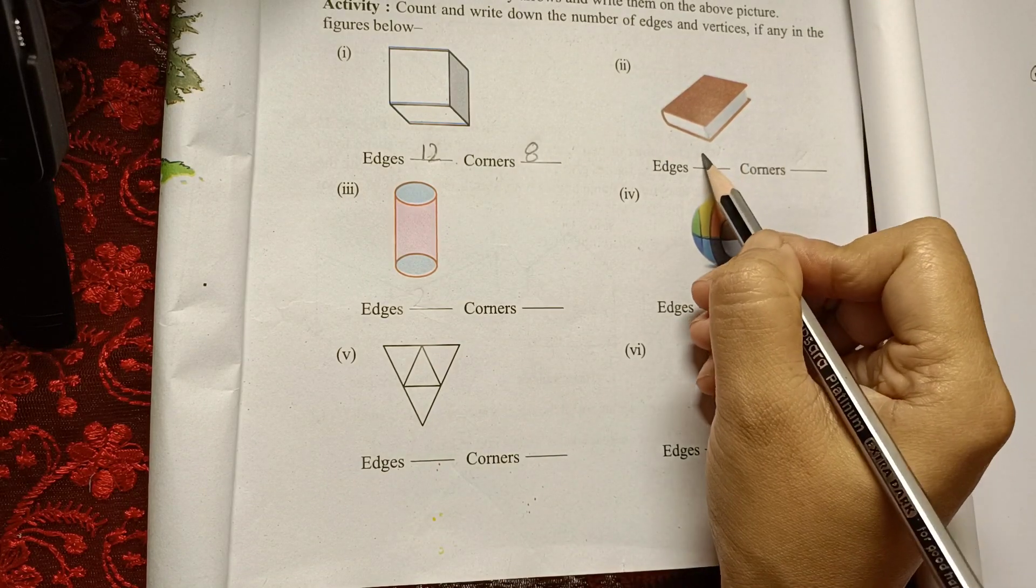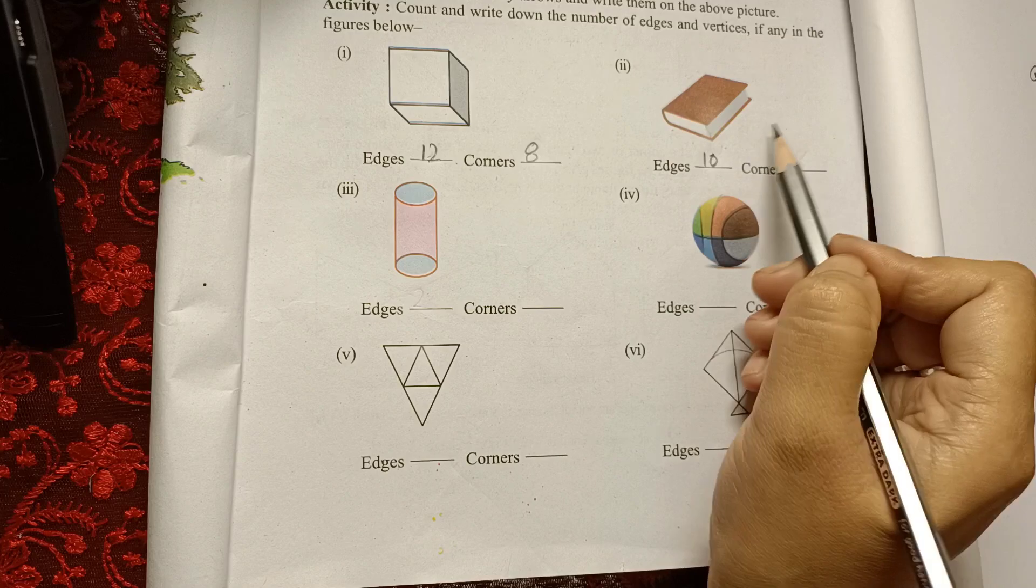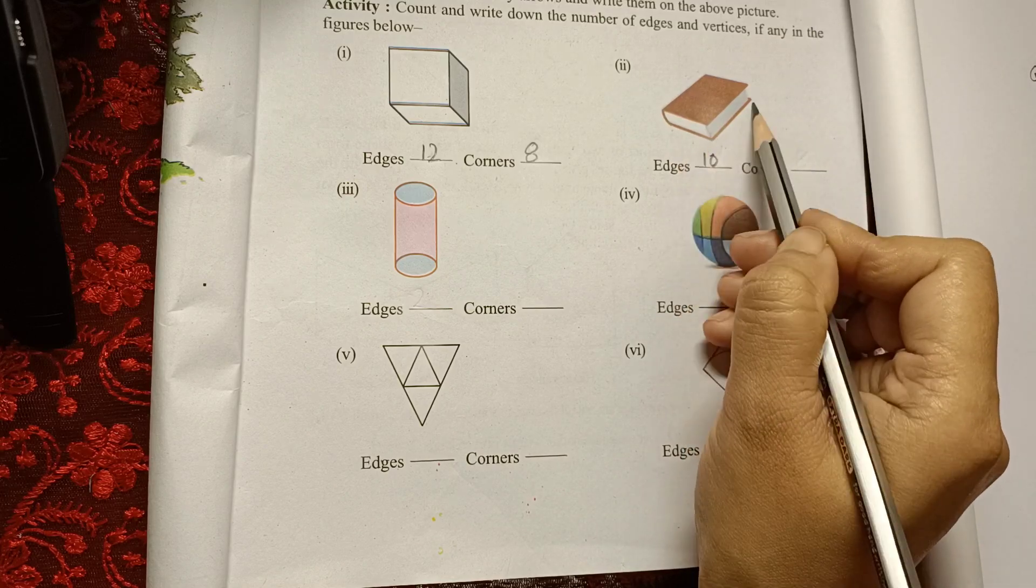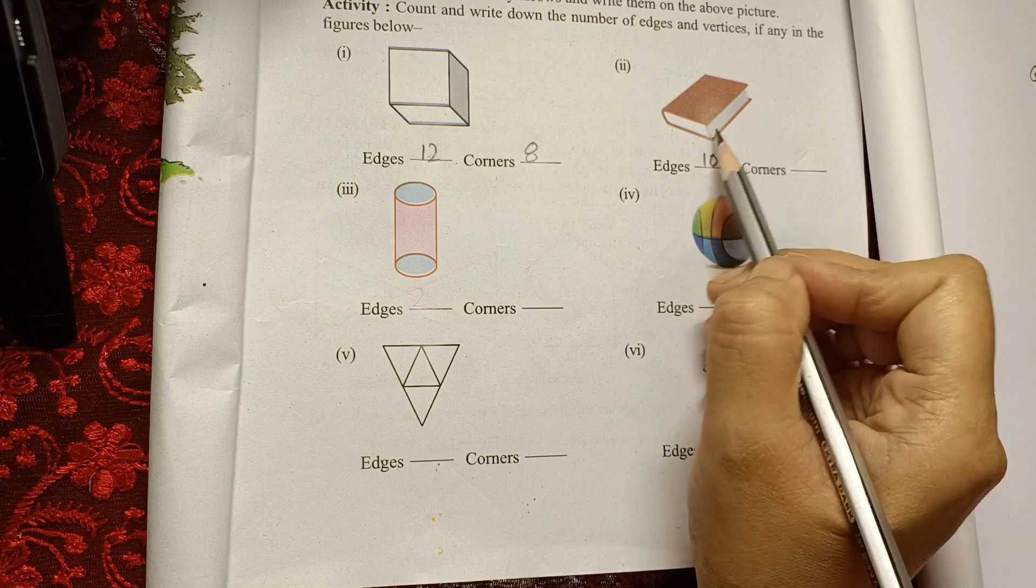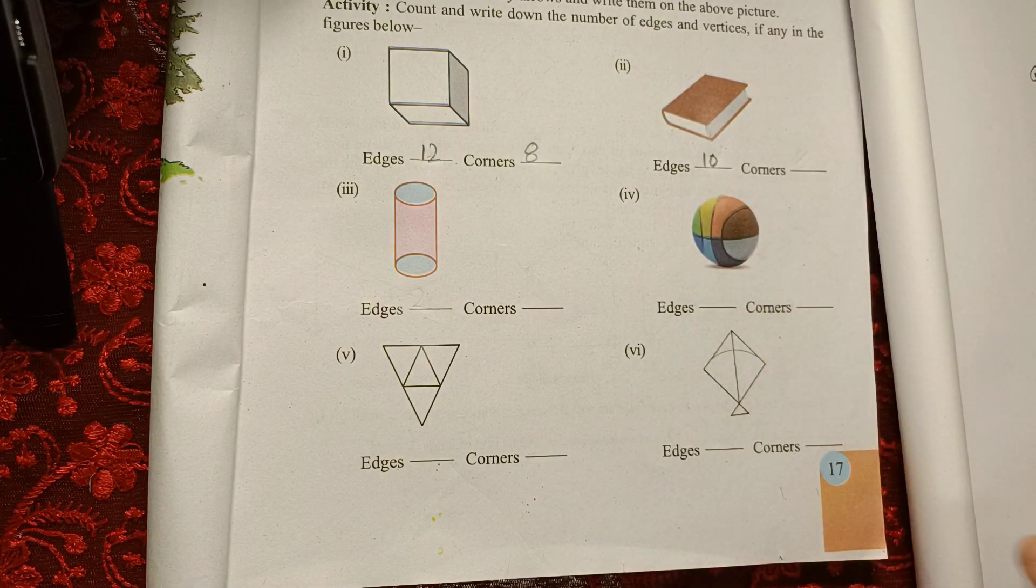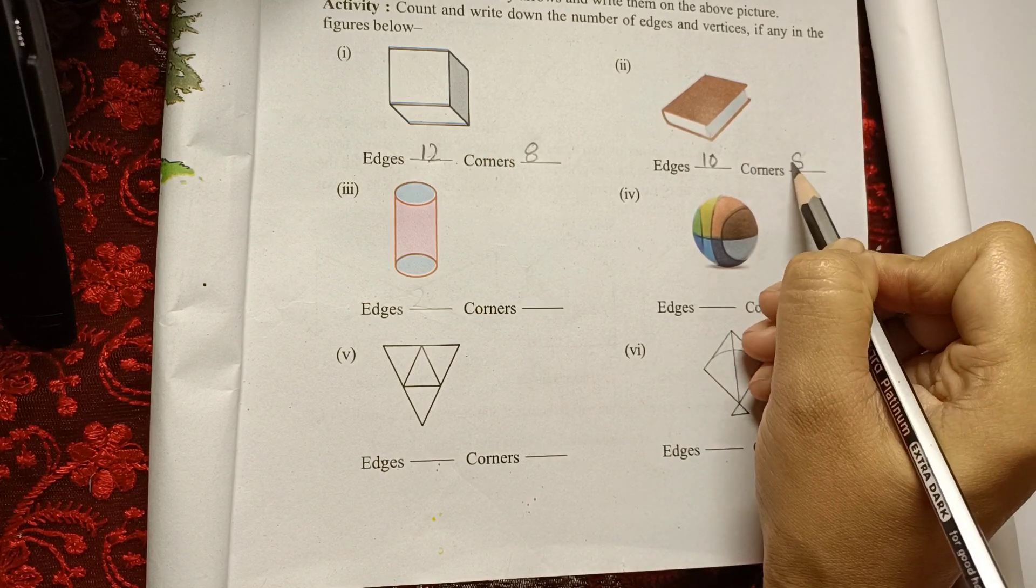We have 10 edges like 1, 2, 3, 4, and from the other part we have 5, 6, 7, 8, 9, and 10. These are not the edges. And corners, the same here, we have 8 corners.